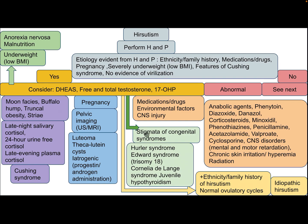If there are stigmata of a congenital syndrome such as Hurler syndrome, Edwards syndrome (trisomy 18), Cornelia de Lange syndrome, or juvenile hypothyroidism, these should be considered. If there is ethnicity or family history of hirsutism with a normal ovulatory cycle, the diagnosis is idiopathic hirsutism.